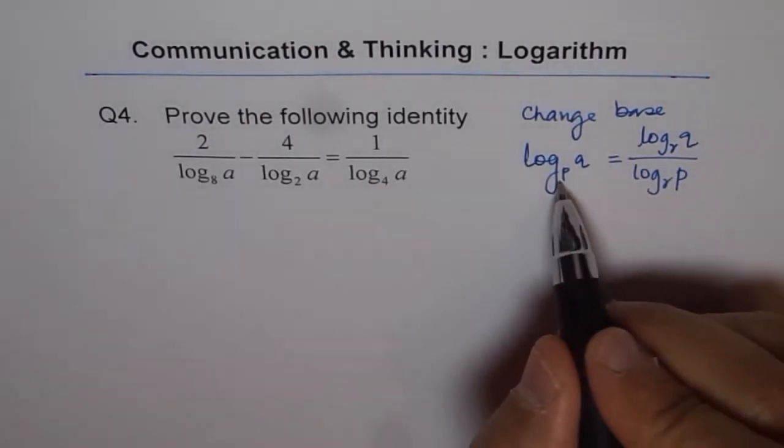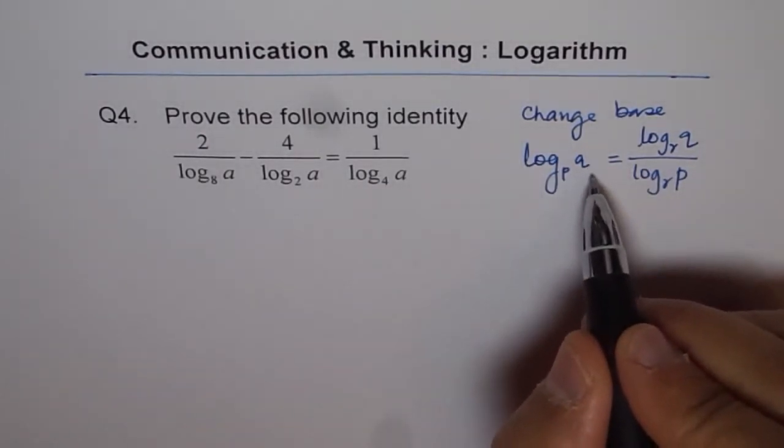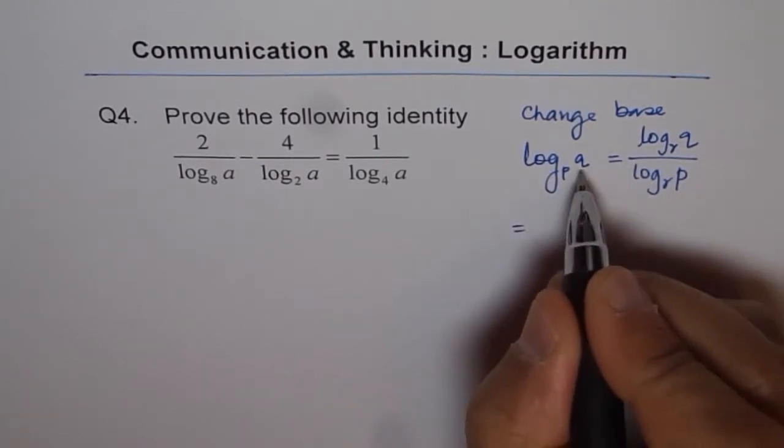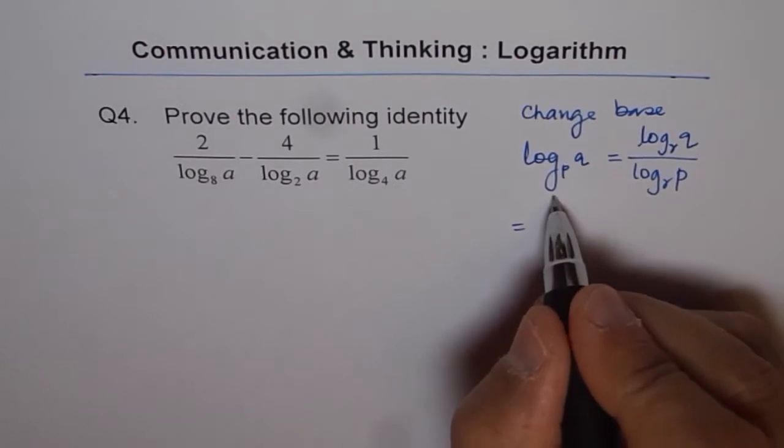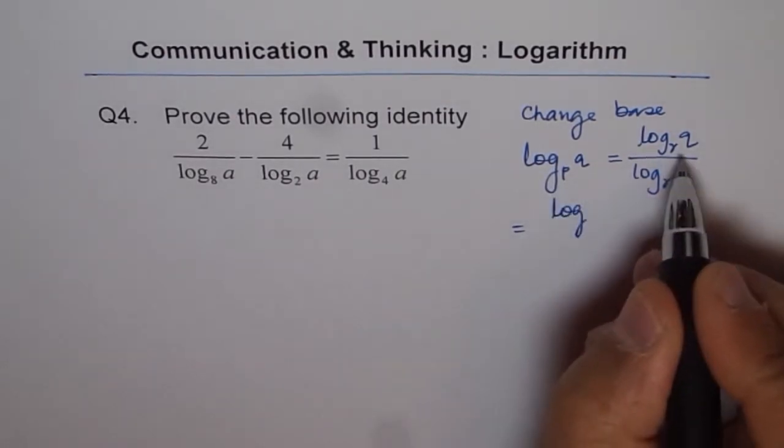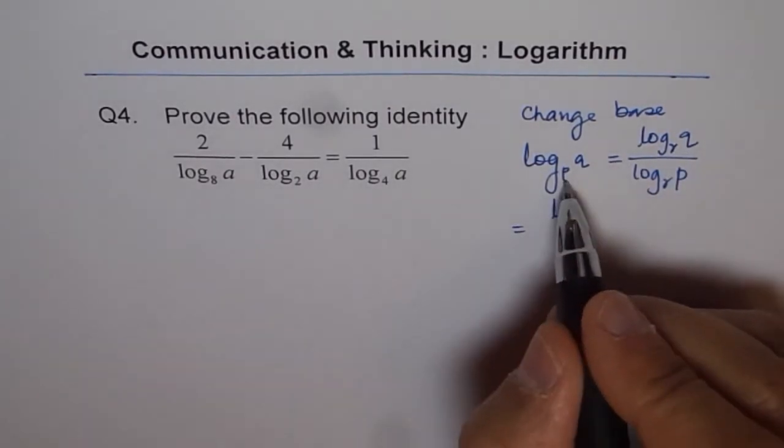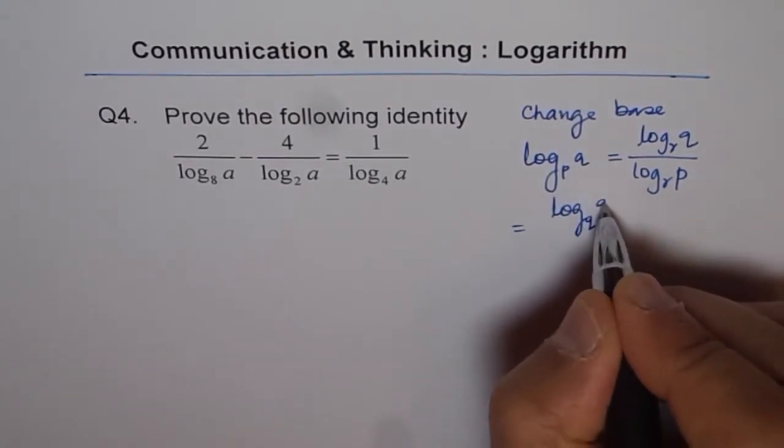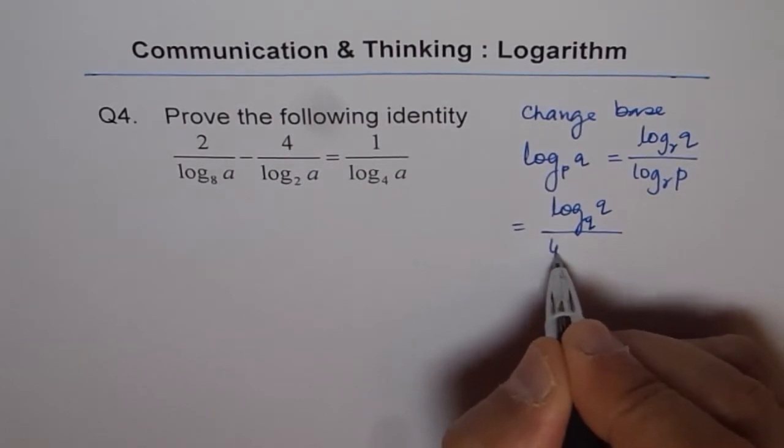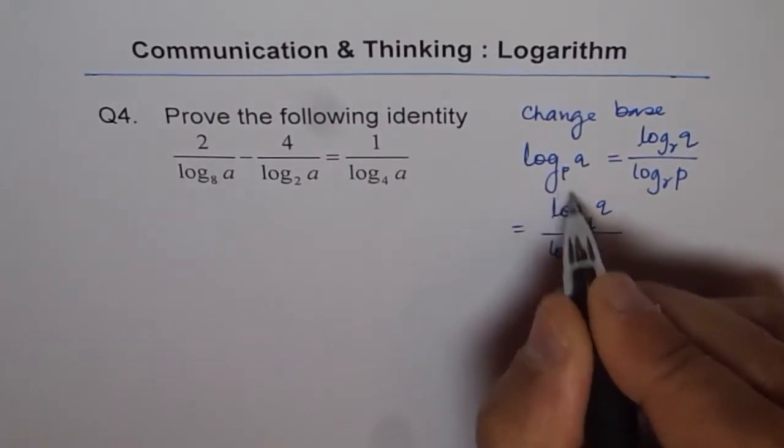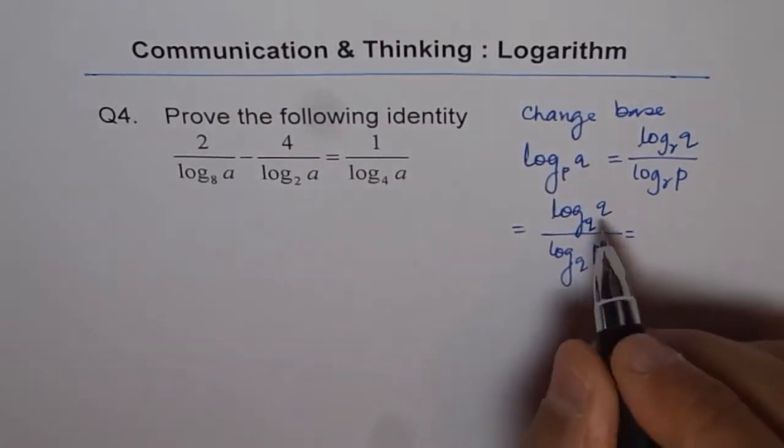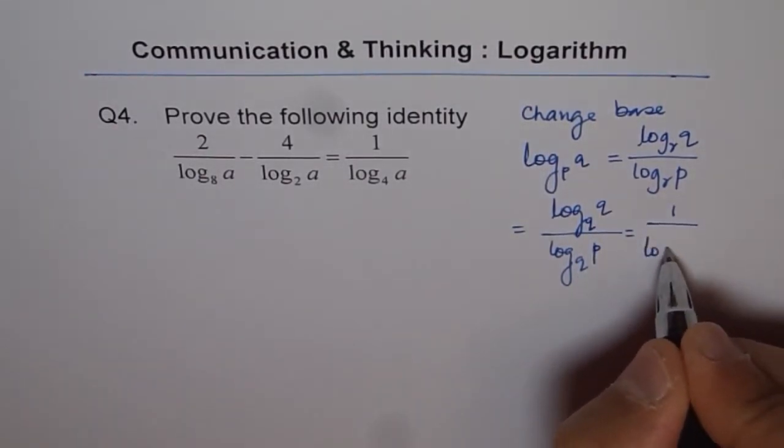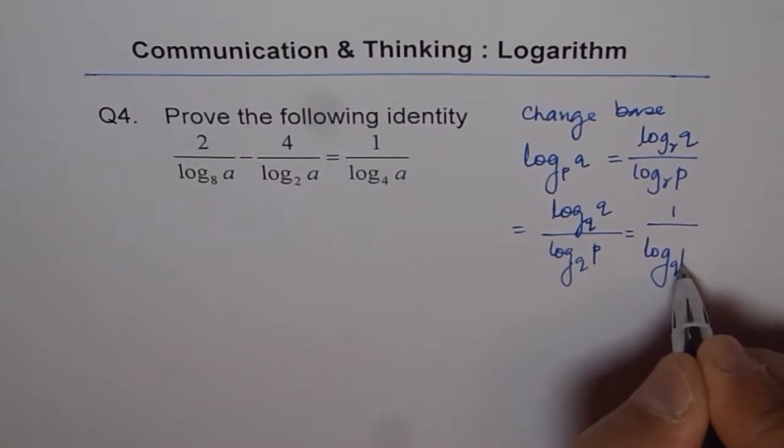Now think about changing the base to Q itself. Then what happens? So if I change this base to Q, then I can write this as log Q of Q in the numerator divided by log Q of P. Now what is log Q of Q? It is 1. So it could be written as 1 over log Q of P.